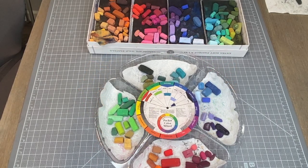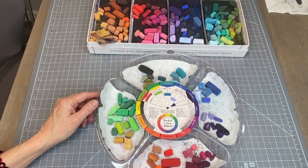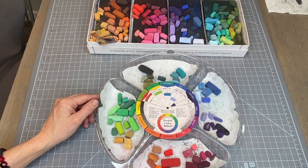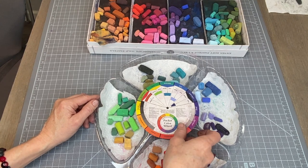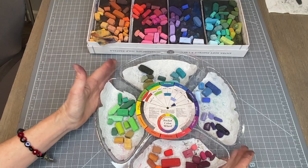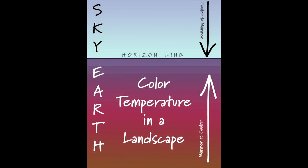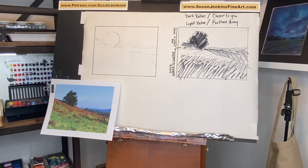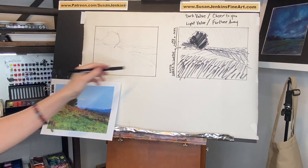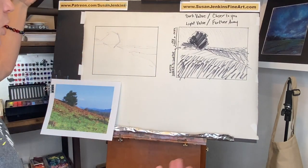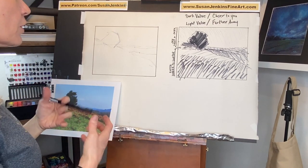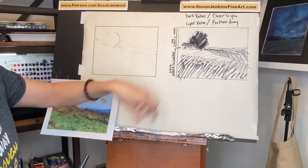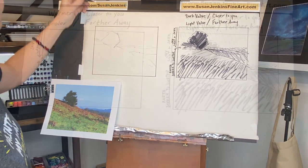I also recommend using an appetizer tray — not only for understanding warm versus cool colors, but also if you don't have many pastels and you're just getting started, it makes a great little pastel palette. That's a neat little trick I discovered a few years ago. Remember, you can find this free graphic as a clickable link in the description, which will complement the lesson. So we have our value example, and now let's talk about color temperature.